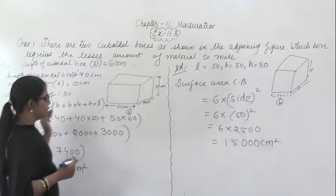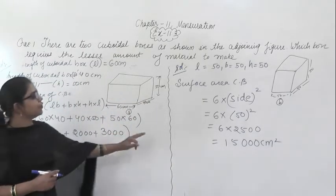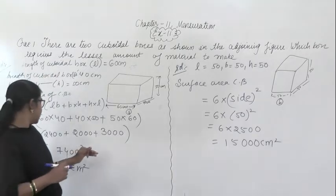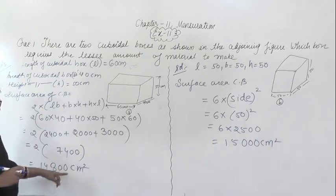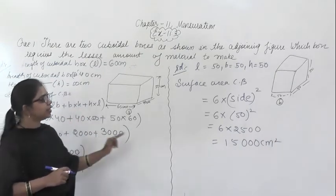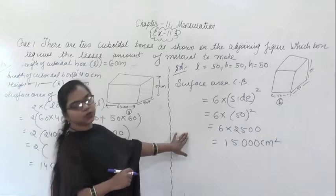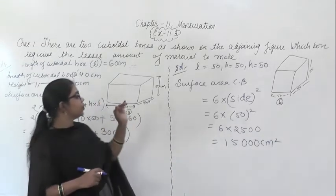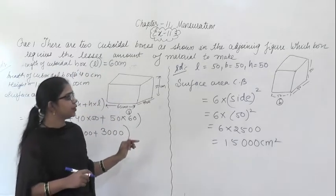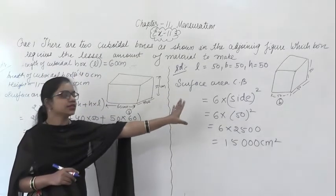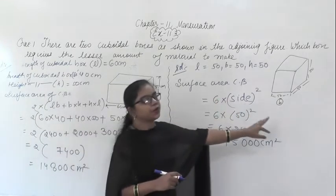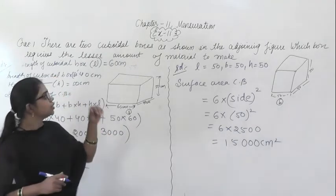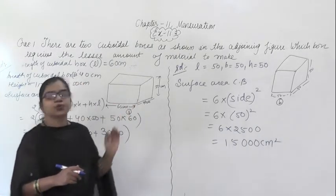Now from here you can compare which one will require the lesser amount. As the result from box 1 (14800 cm²) and box 2 (15000 cm²), we can compare which box requires lesser amount of material to make. Box B, the cuboidal box with equal sides, will require lesser amount of material to make.